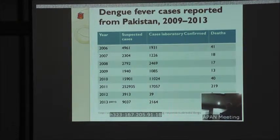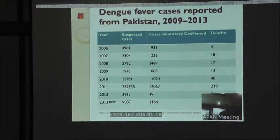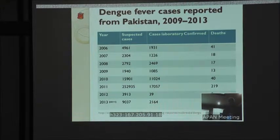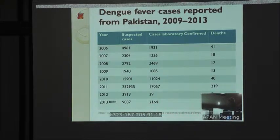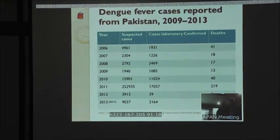By surveillance and notification, we have collected data. The problem with this data is that up to 2011-2012, it is published by the World Health Organization and the Government of Pakistan. After 2012, it is still under process and not accessible to scientists and other people. This is delayed notification — one cannot take action or give a timely response due to this delayed notification. This is basically the issue.